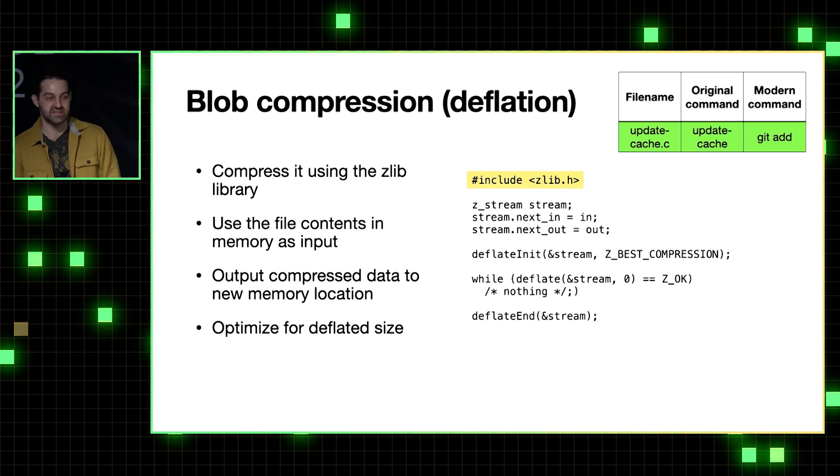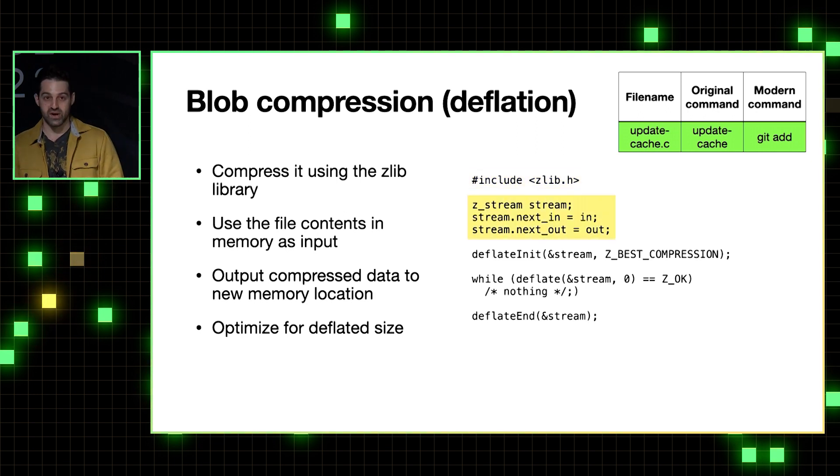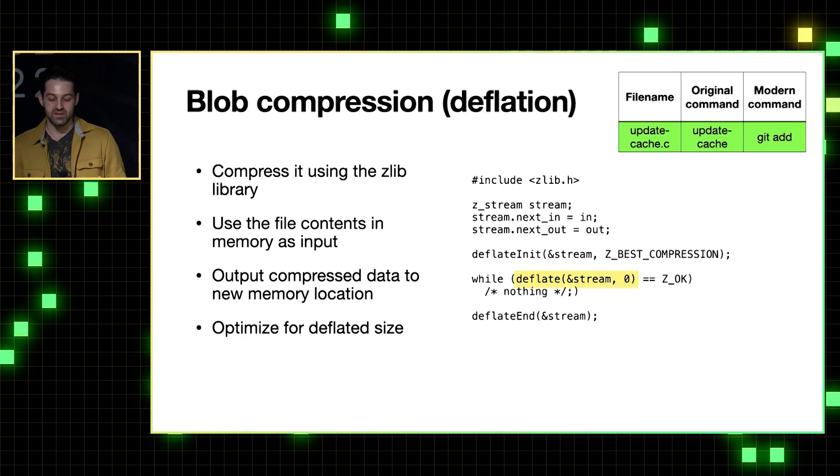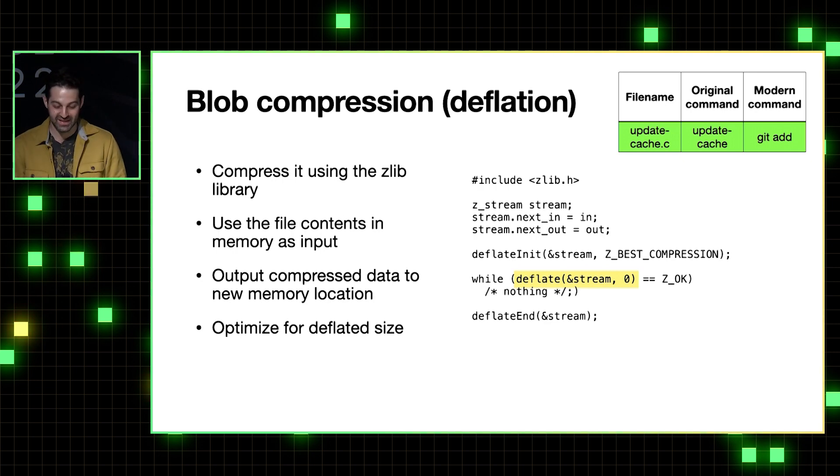So now that Git's code has access to the file's content, it compresses it using the zlib library. And it does this by setting up a zlib compression stream and then using our in variable as input to that stream and setting up an output location to put the compressed data. And then this zlib deflate function actually takes care of doing the compression. And that's it.